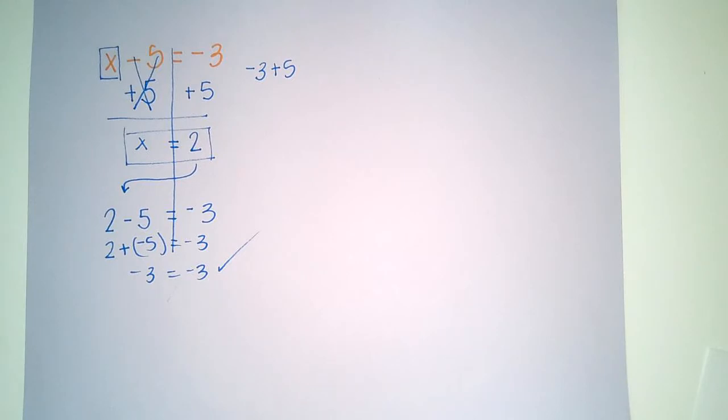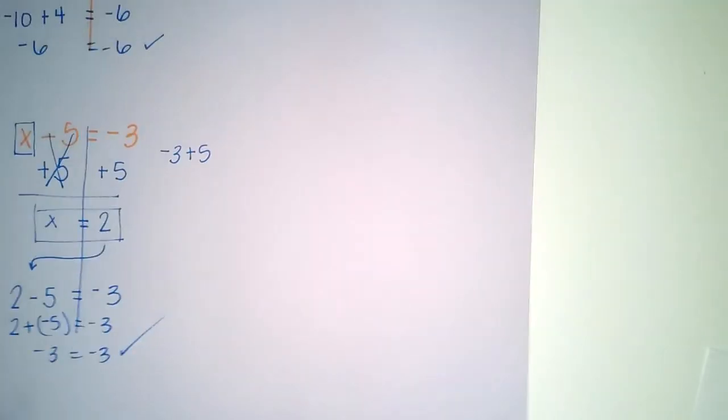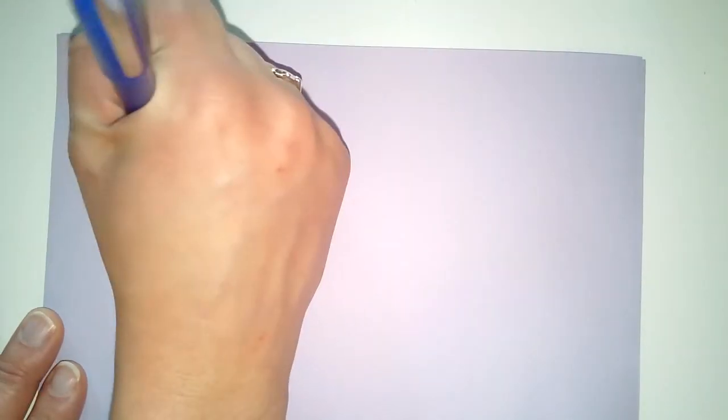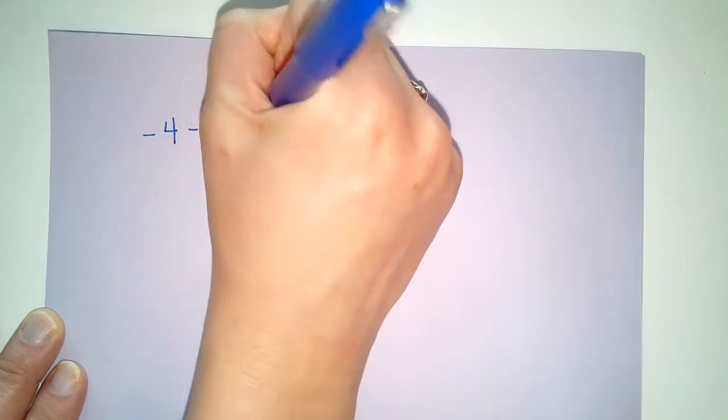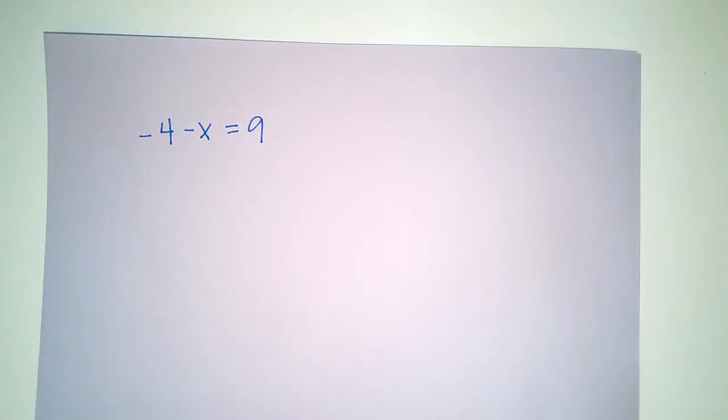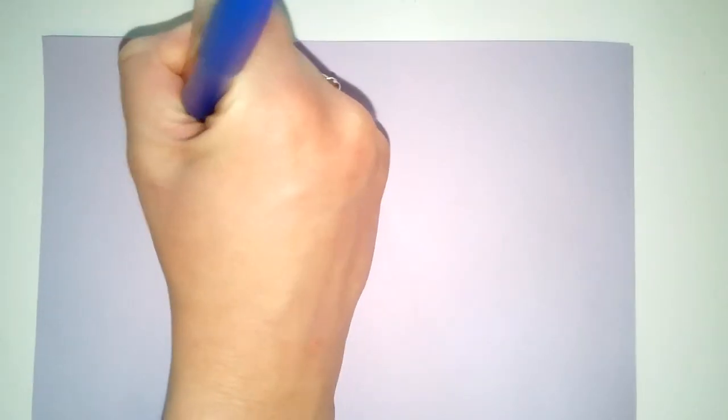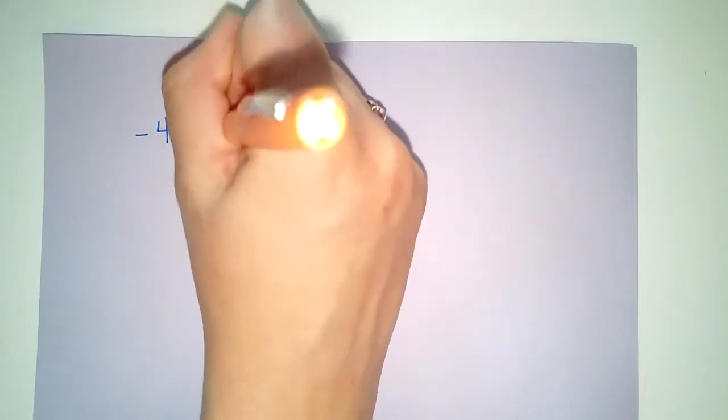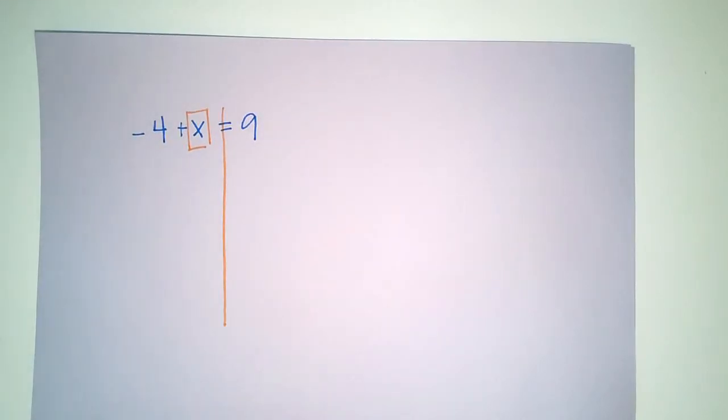All right, let's try two more problems together. Let's try this one. If I have -4+x=9, I'm going to start by boxing my variable. Oh, excuse me. This is a plus sign. -4+x=9. And then draw my line. Step two, I need to ask myself how I'm going to isolate that variable.